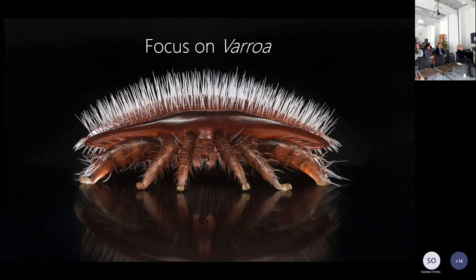To explain the problem with this mite's feeding: they really consume the fat body of the bees, which is incredibly damaging, and they transmit viruses. As Samuel Ramsey — the person who originally discovered this — described it: take your hand and put it on your face. Now imagine your hand is a parasite, a lot like a tick, but instead of sucking out your blood, it's liquefying one of your internal organs and sucking part of that out of your body. If you were a honeybee, you wouldn't have to imagine.